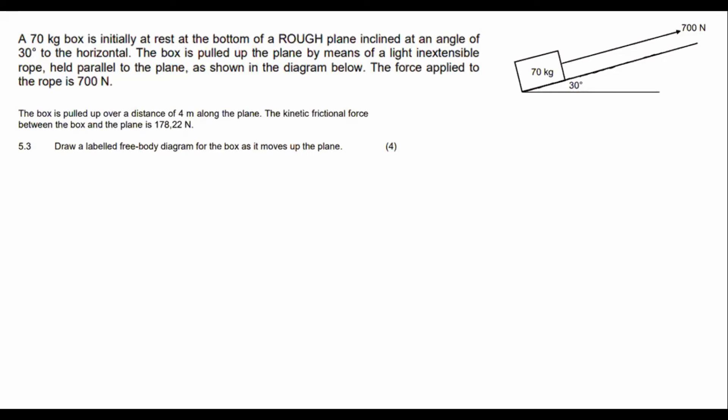Okay, a 70 kilogram box is initially at rest at the bottom of a rough plane at an angle of 30 degrees to the horizontal. The box is pulled up. The force applied to the rope is 700. The box is being pulled over a distance of four meters.